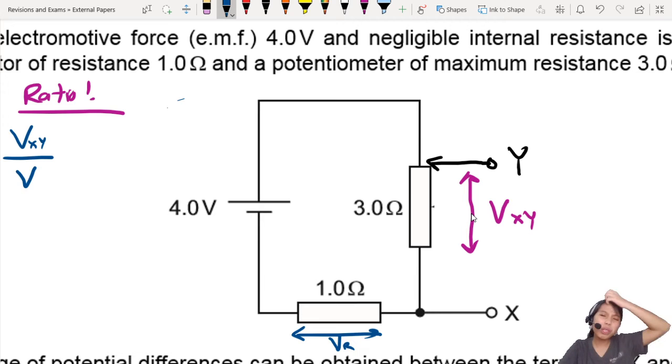We can't do that. Another ratio you could do is VXY over the total potential drop. Total means what is applied to the whole circuit.